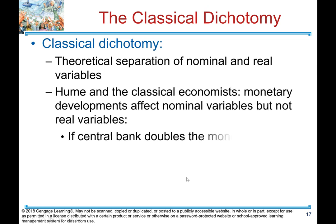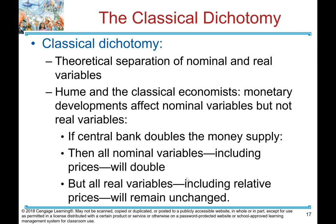The classical dichotomy is the theoretical separation of nominal and real variables. David Hume and the classical economists asserted that monetary developments affect nominal variables but not real variables. If the central bank doubles the money supply, then all nominal variables including prices will double, but all real variables including relative prices will remain unchanged.